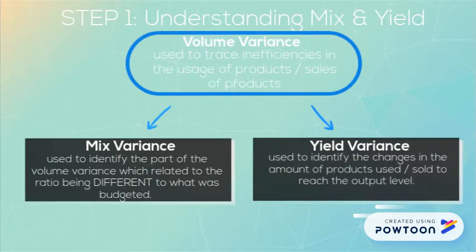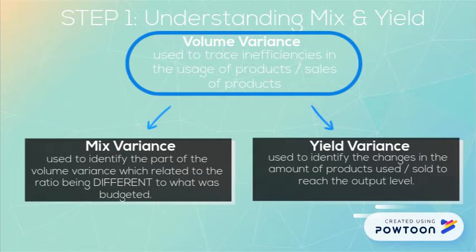The volume variance is used to trace inefficiencies in the usage of products and is split into the mix and the yield variance. The mix variance is the part of the volume variance which relates to the ratio being different, and the yield variance is used to identify changes in the amount of products used or sold to reach the output level.